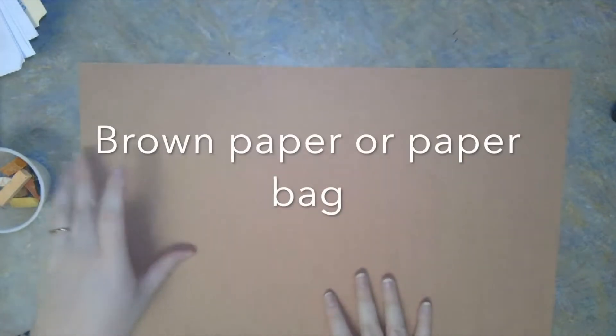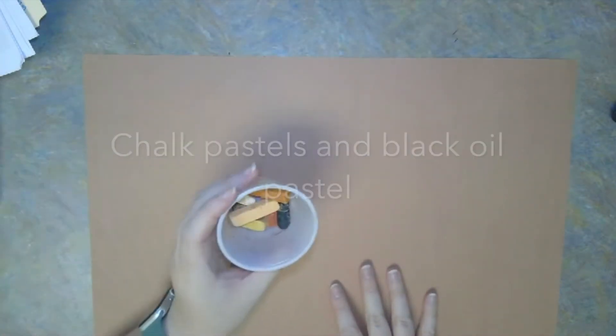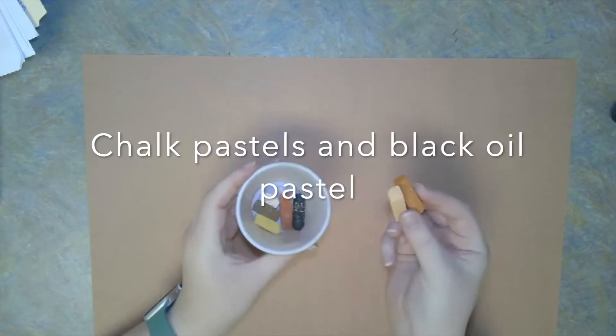The cavemen used things like clay, berries, rocks, and charcoal to add color to their drawings. We're going to be using black oil pastels and different colors of chalk pastels.